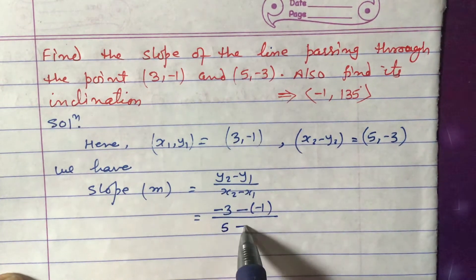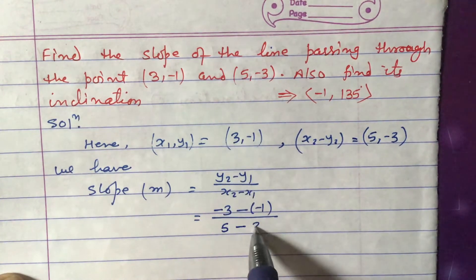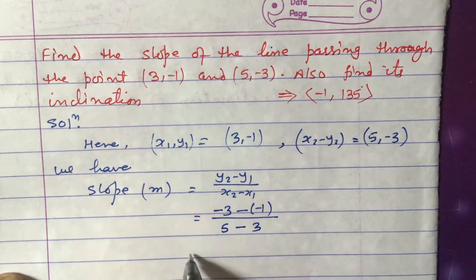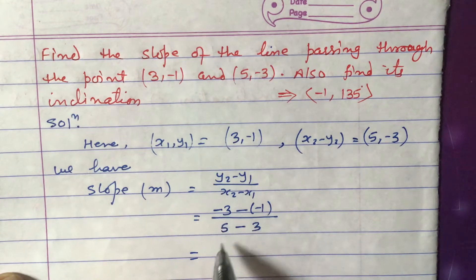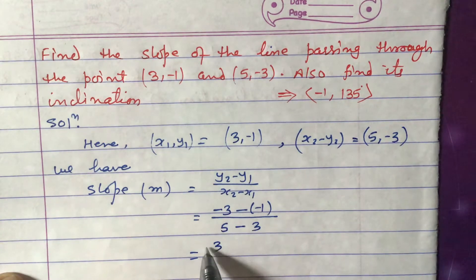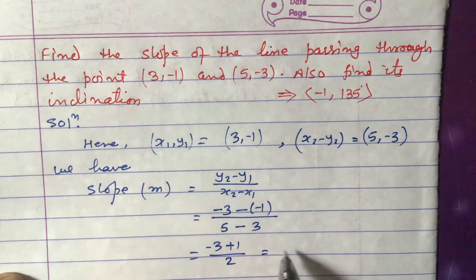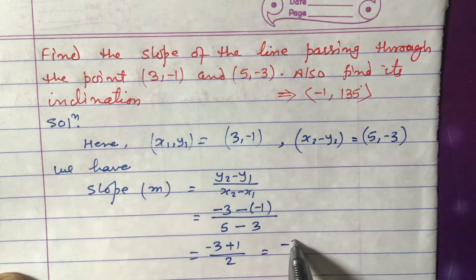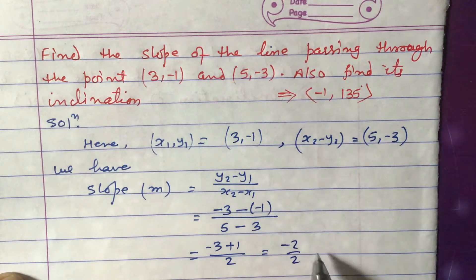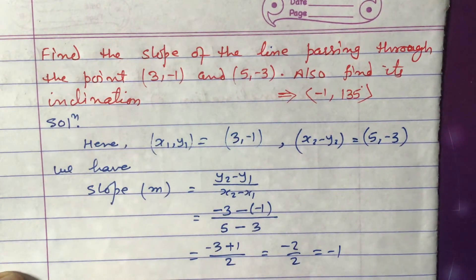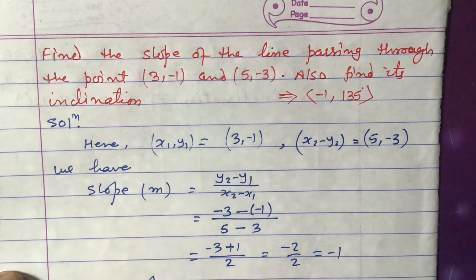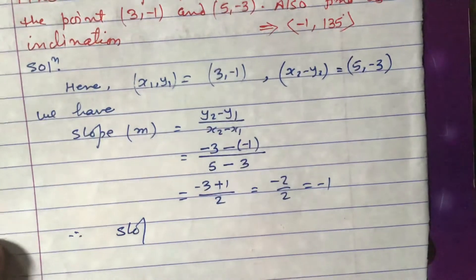Continuing: minus x1 which is 3. So this equals minus 3 plus 1 divided by 2, which equals minus 2 by 2, which equals minus 1.